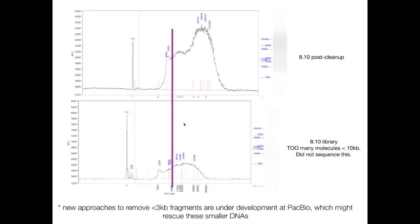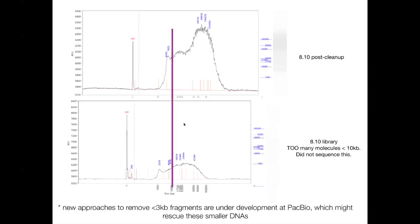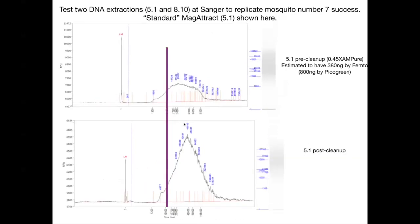We had a lot of small molecules in one extraction, so we tried to clean it up. The resulting library had too many molecules less than 10 KB, so we decided it was not a good library to sequence. This suggested that a very high molecular weight input profile may not be ideal for the low input approach. PacBio is also working on new approaches right now to remove fragments less than 3 KB, which can cause problems in getting good long molecules out of a PacBio run.